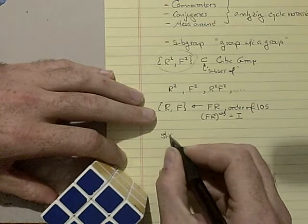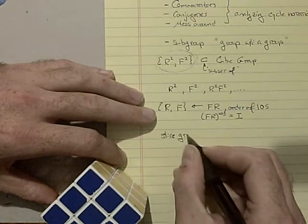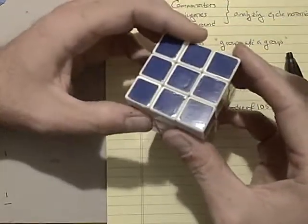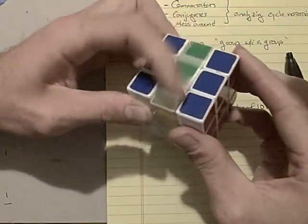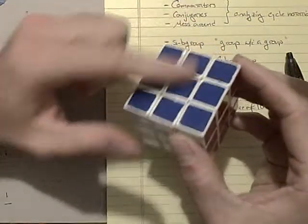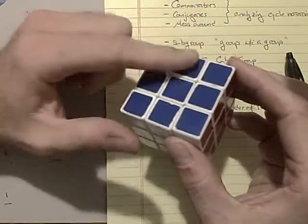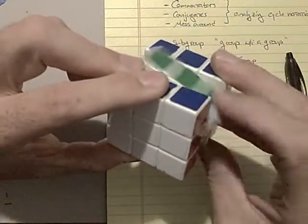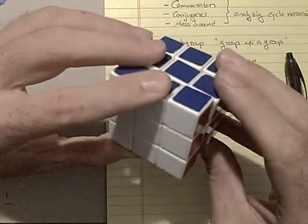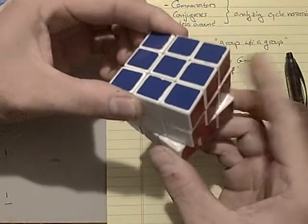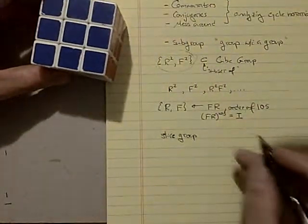Another one is the slice group and also the slice squared group. What this is is you only consider moving the center layers. So this is this move here you might call it R sub S, the right slice group. There's a move that you might call F sub S, which is the front slice group, and a move you might call U sub S, which is the up slice group. There are different notations for this; this is the one I like to use.